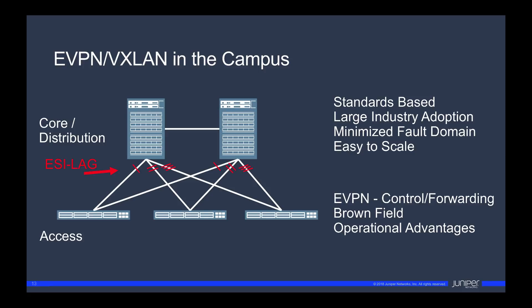Again, standards-based. Large industry adoption of EVPN. Minimized fault domains with a robust, standards-based, highly scalable control plane. Easy to scale — if I need to add 40GB, 100GB, 200GB interfaces in the access, I'm not locked into specific boxes, chassis limitations, or even vendors. All the same advantages that a fabric has in the DC. But here's the difference and the key: with ECC architecture, there is no need for the access boxes to speak BGP, VXLAN, or even EVPN. No BGP, VXLAN, or EVPN required in the access. Just LAG, LACP, and VLAN support. That's the beauty and the simplicity of ECC.